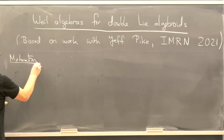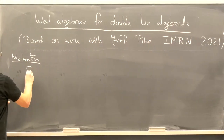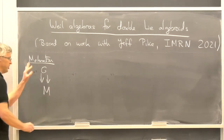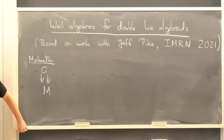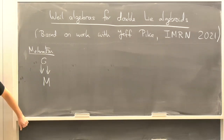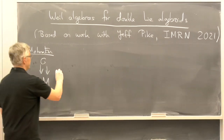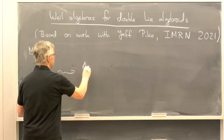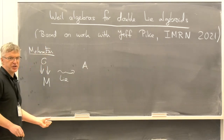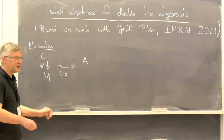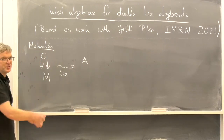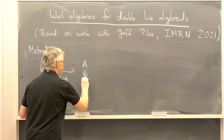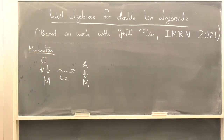To get started, I want to give a bit of motivation — how I started working on these things together with Jeff. The motivation came from Van Est theory, and most basically Van Est theory for Lie groupoids. If you're given a Lie groupoid, I indicate it by a manifold with double arrows, then there's an associated Lie algebroid. That's the Lie functor, and I'm using this notation with a double arrow.